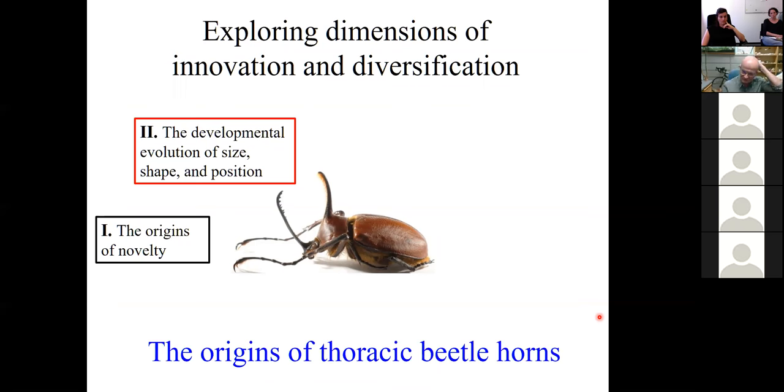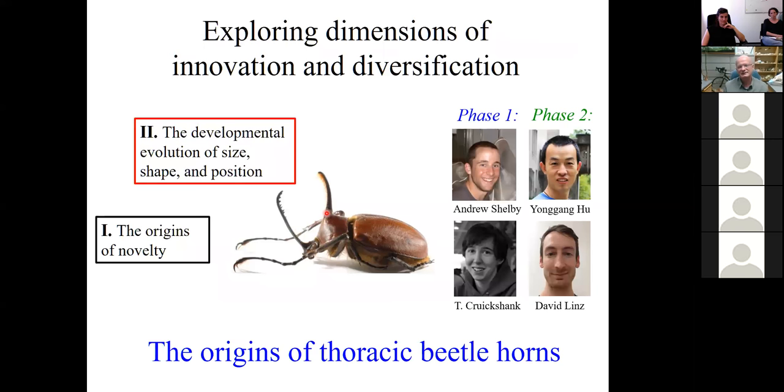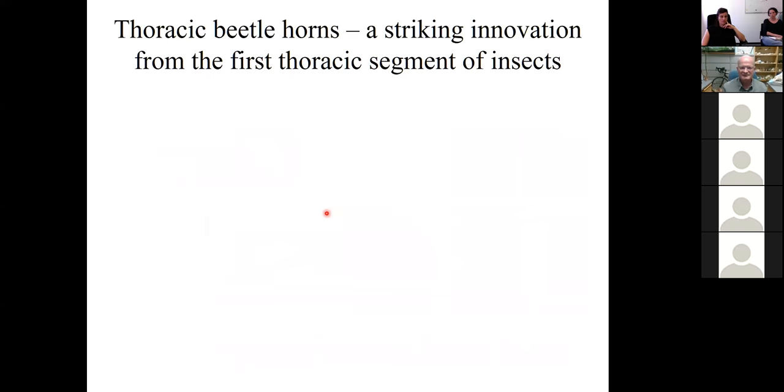So armed with this background knowledge, let's embark on our first two dimensions of innovation and diversification, the very origins of novelty and the developmental evolution of size, shape, and position. Here I want to focus on the origins of thoracic beetle horns. I'm going to tell you that story in two phases. The first one is work by Tammy Cruikshank and Andrew Shelby. Yong Gong Hu and David Linz then mark the second phase. Both are current postdocs in the lab.